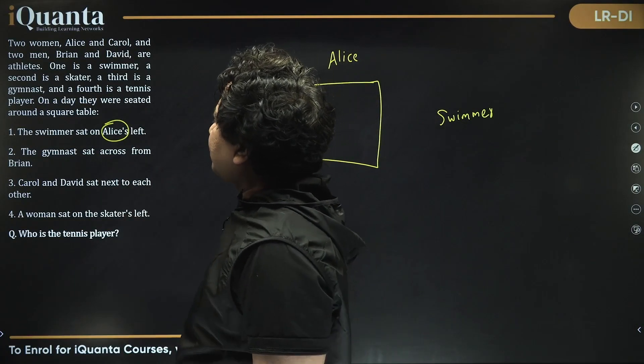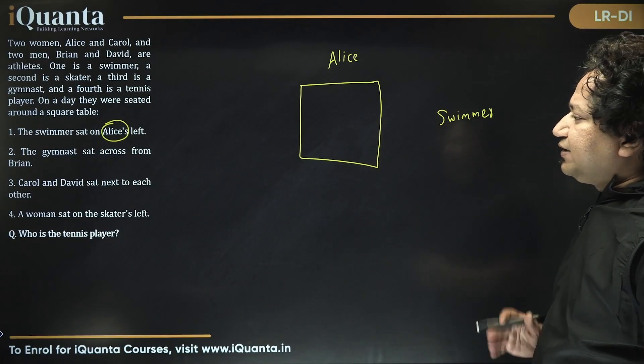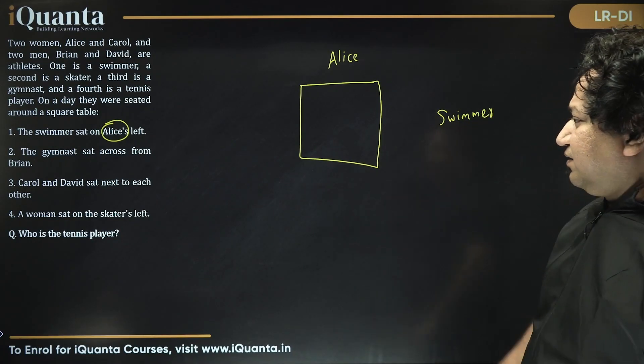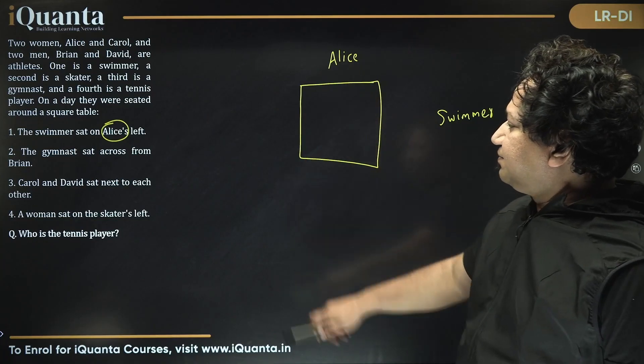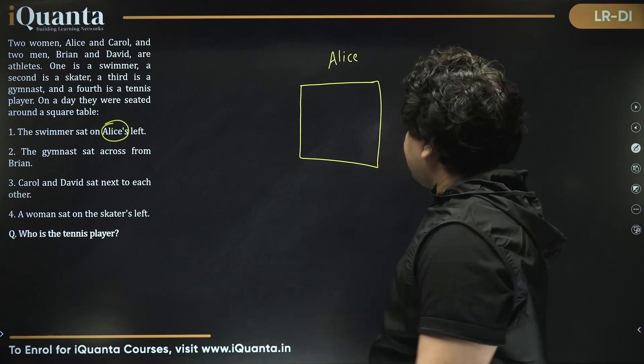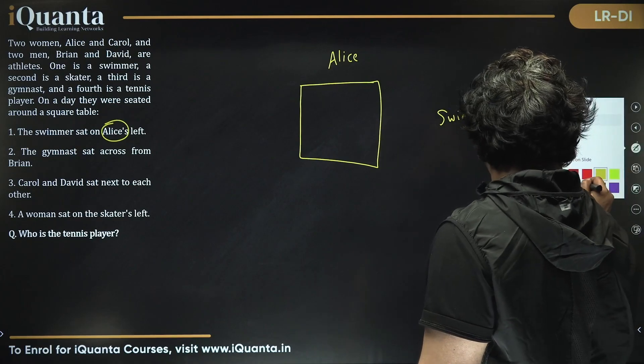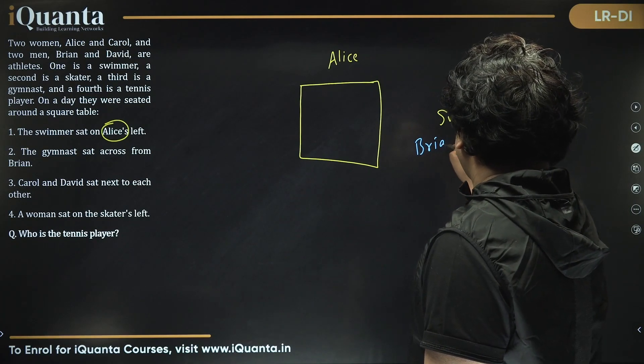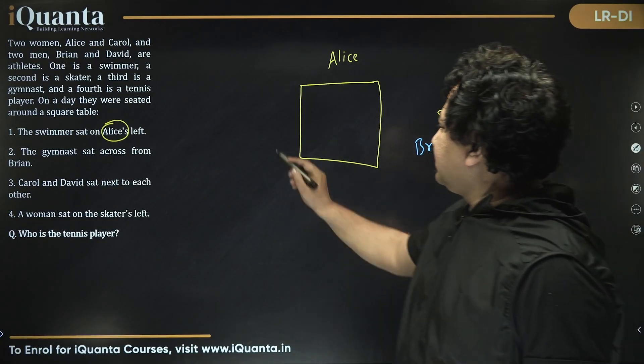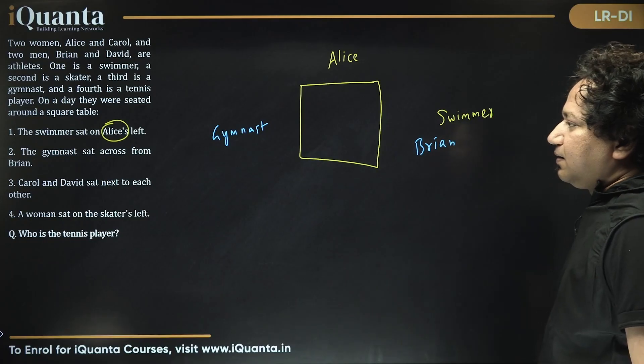Now it says gymnast sat across from Brian. So we are sure this can't be gymnast. This can be Brian, obviously. And this can't be Brian. This can be gymnast if Brian is here. So we have different possibilities. What if I assume, so I'll just take blue ink now. That's an assumption. Let's say this is Brian. Alice and Swimmer are determined. Then gymnast must be sitting over here across Brian.